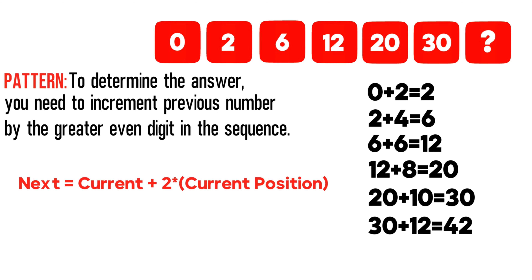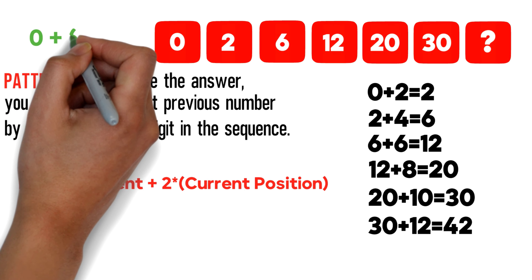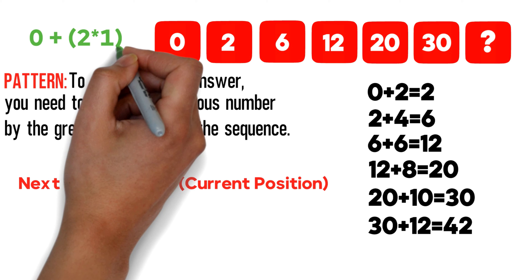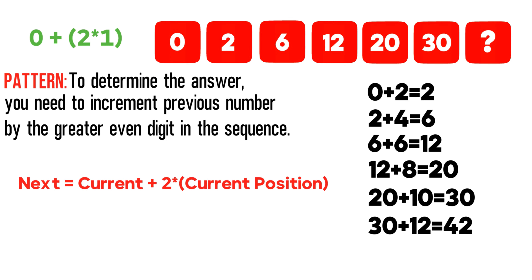Let's see how it works. Take the number 0, the first number in the sequence. Add 0 plus two times one equals 2. Alternatively, you can just add the next even number each time: add 2 to 0 to get 2, add 4 to 2 to get 6, add 6 to 6 to get 12, add 8 to 12 to get 20, add 10 to 20 to get 30, and add 12 to 30 to get 42. The correct choice is A, forty-two.